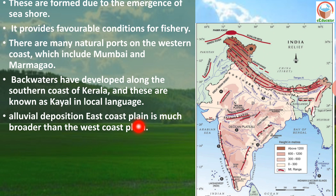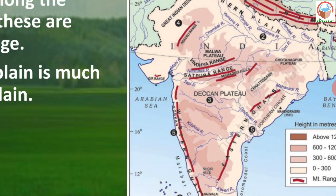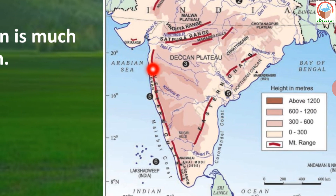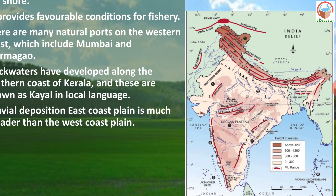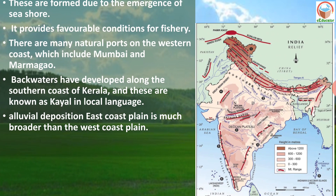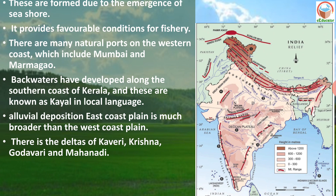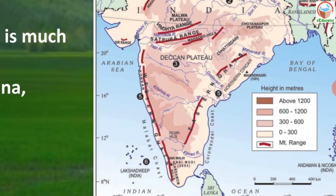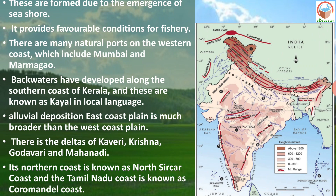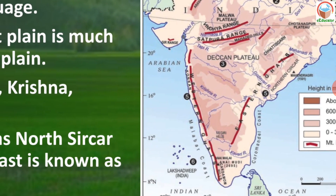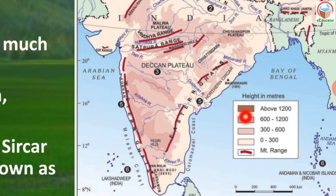The eastern coastal plain is much broader than the western due to alluvial deposition. The rivers Kaveri, Krishna, Godavari, and Mahanadi have made delta regions here. The northern coast is known as the Northern Circars, while the Tamil Nadu coast is known as the Coromandel coast.